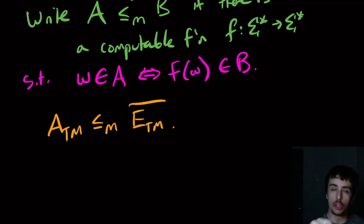We had to invert the answer there. So here it was actually a reduction from A_TM to E_TM complement, because we produced that Turing machine that corresponds to the complement of E_TM.